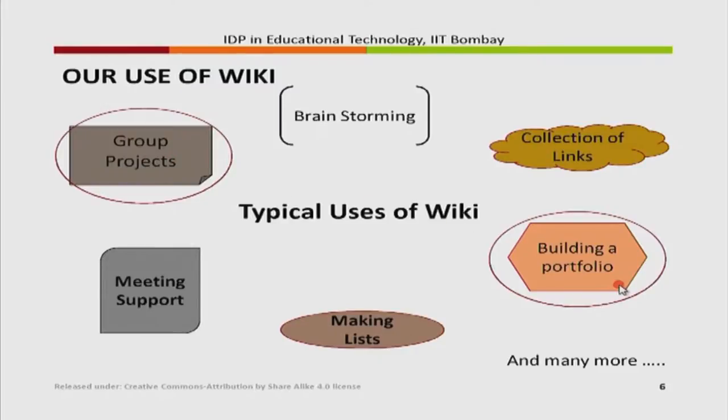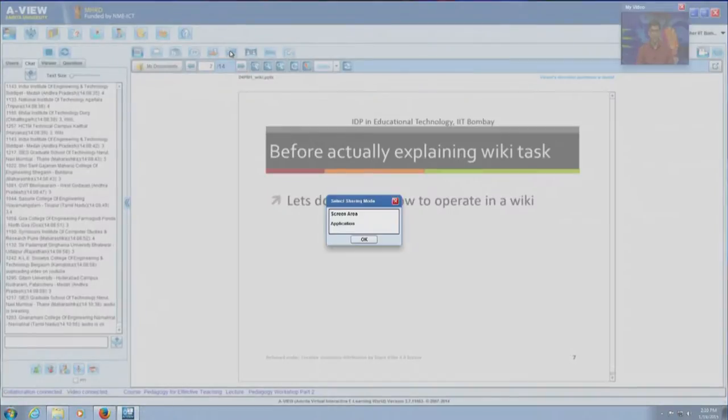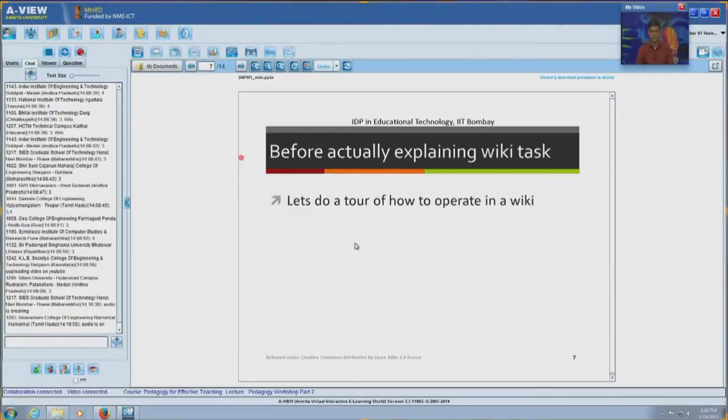Specifically across this workshop you will be using wiki for two things: one is for a group project and another is for building a portfolio. Before actually explaining the wiki task, we will do a tour of WikiSpaces, specifically the wiki for trial that we have created. What I am going to do now is do a screen share and login to wiki, and explain the procedure right from logging in to execution of tasks in wiki for trial.